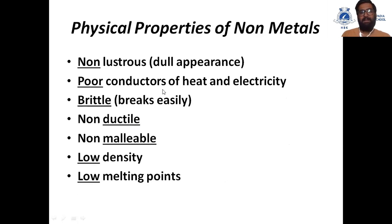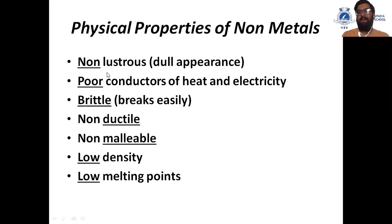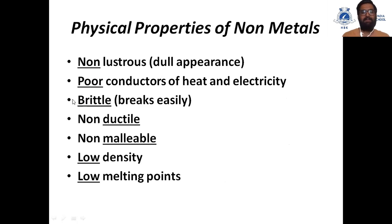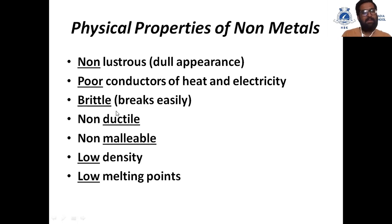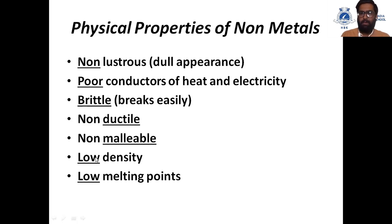Now some physical properties of non-metals. Non-metals are non-lustrous — they have a dull appearance. They are poor conductors of heat and electricity, meaning they are good insulators. They are brittle, meaning they break down easily. They are non-ductile, non-malleable, and they have low density and low melting points.